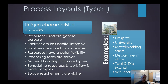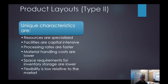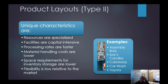In the type two category — product layout — the characteristics are quite different. We have very specialized resources and capital intensive facilities. Processing rates are much faster, material handling costs are much lower, space requirements for inventory are kept very low, and flexibility is low relative to the market. Examples include an assembly line like a See's Candy assembly line, cafeterias, a car wash, or Toyota's car manufacturing line.